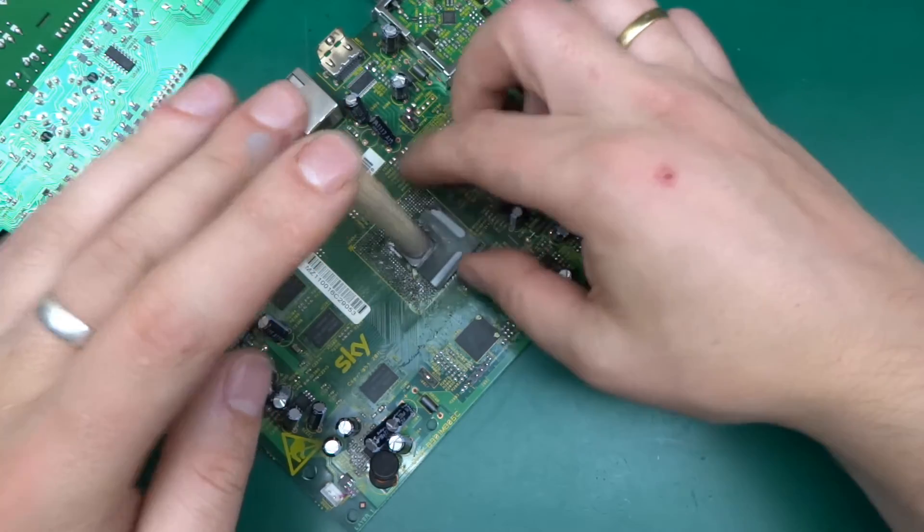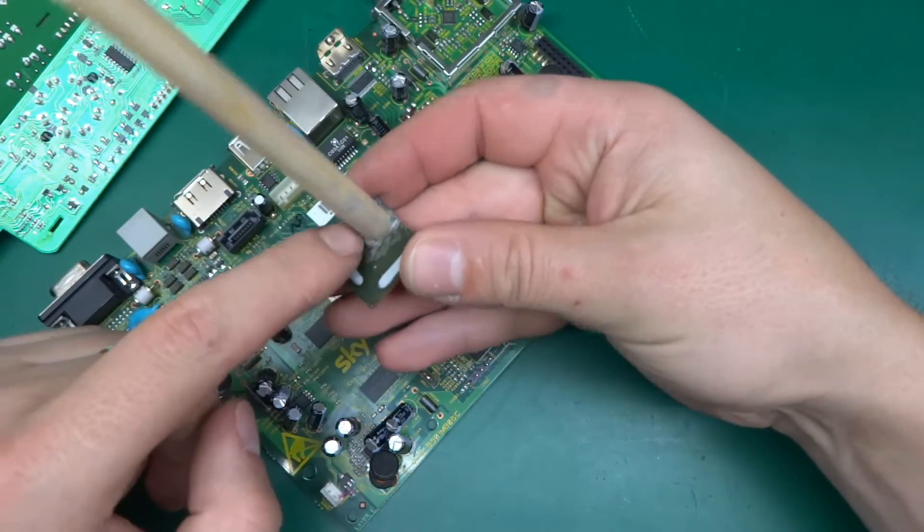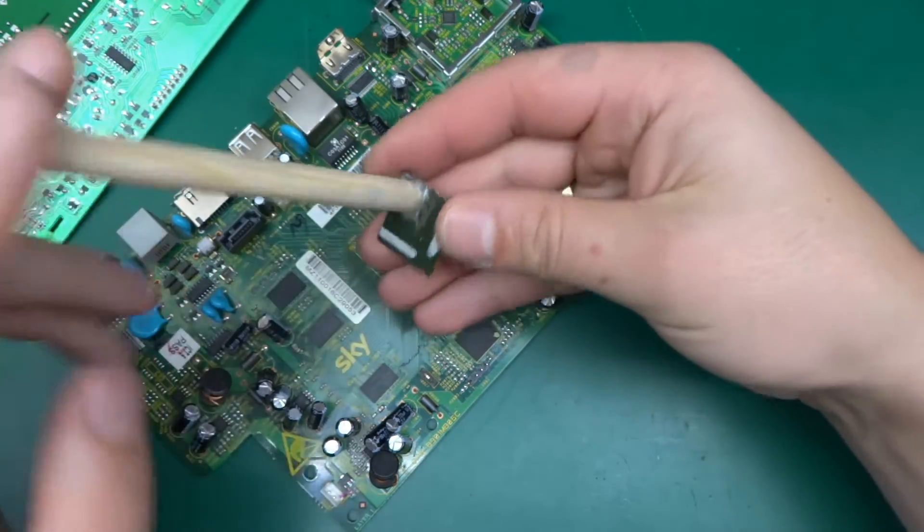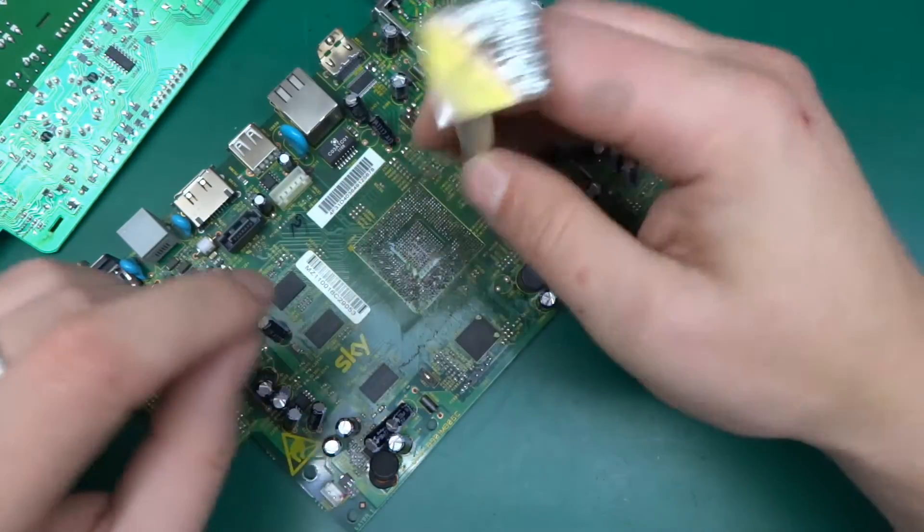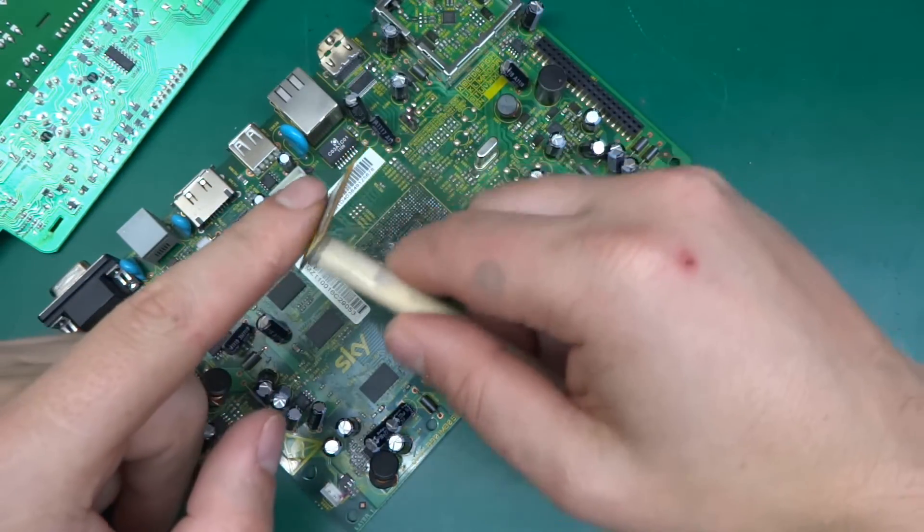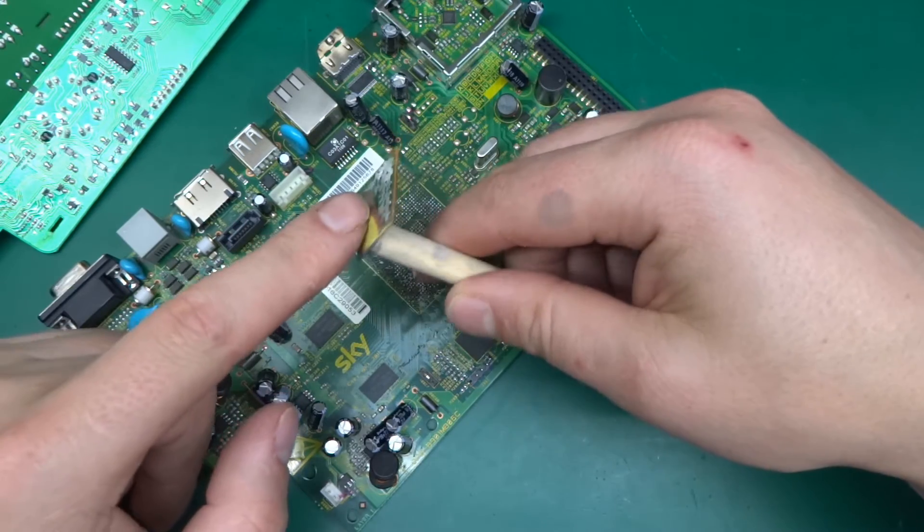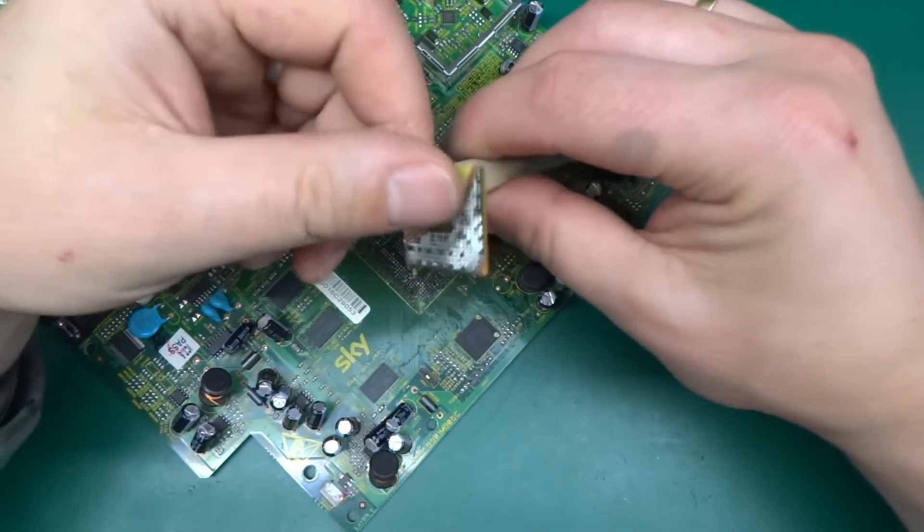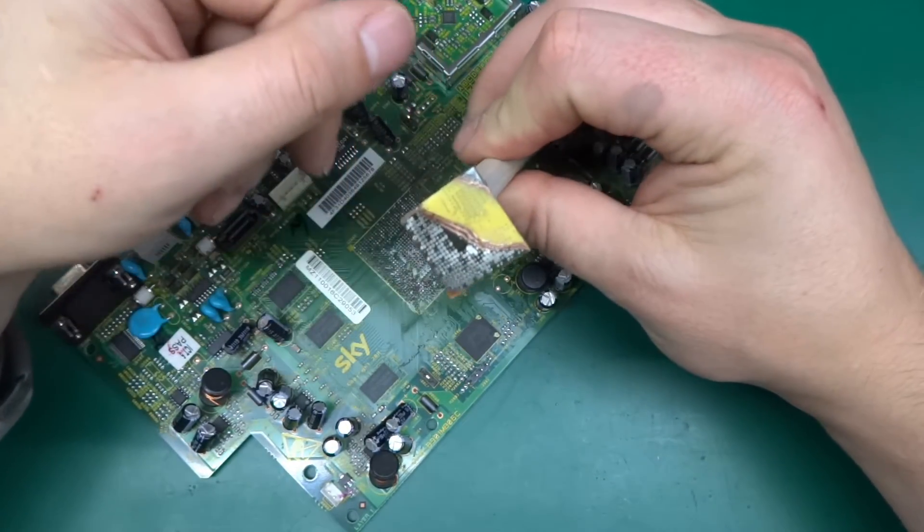And then what I did, I've put a piece of dowel over here with some epoxy and I've started grinding it down on my hard disk sander in order to achieve the gradient like this.